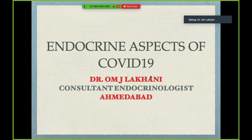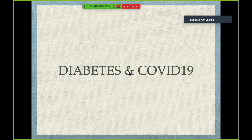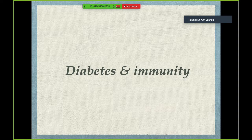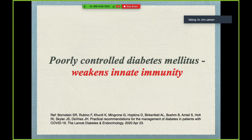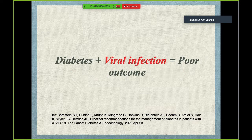Let's start with diabetes and COVID-19, and first look at diabetes and immunity. When COVID-19 first broke out, there were a lot of concerns about a particular subset of patients highly vulnerable to mortality — those with diabetes, hypertension, and cardiovascular disease were predominant, especially from China and Italy where death rates were high. Poorly controlled diabetes mellitus weakens innate immunity, which ultimately leads to enhanced mortality.